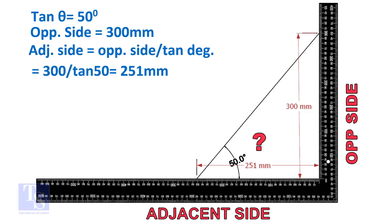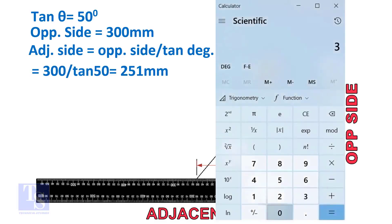Adjacent side is equal to 300 divided by tan 50 degree. Let us calculate.